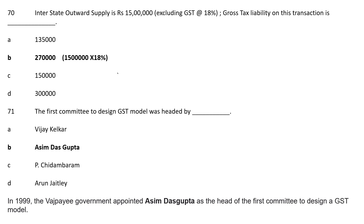Question 71: The first committee to design a GST model was headed by — Option A: Vijay Gilkar; Option B: Asim Das Gupta; Option C: Chidambaram; Option D: Arun Jaitly. The correct answer is Option B, Asim Das Gupta. In 1999, the Vajpayee government appointed Asim Das Gupta as head of the first committee to design a GST model.